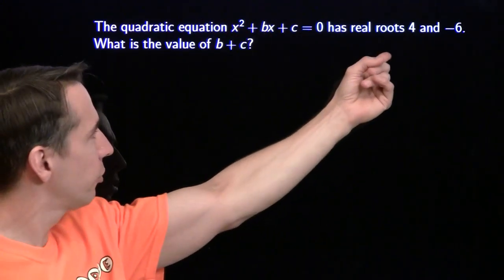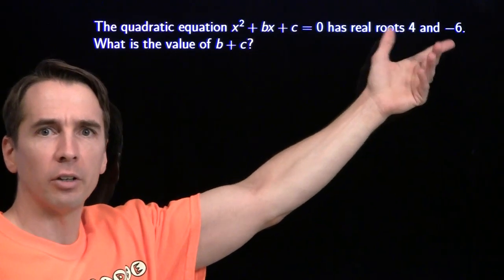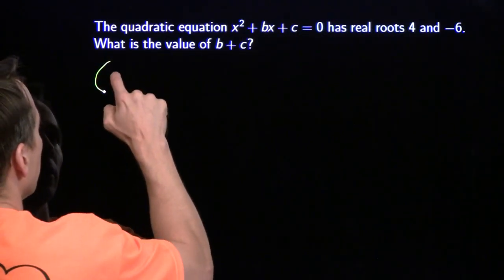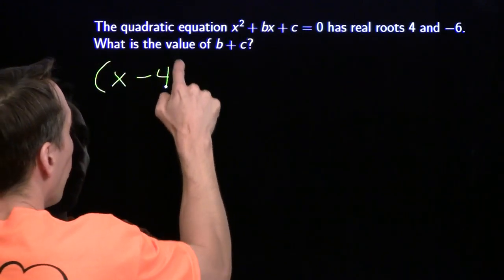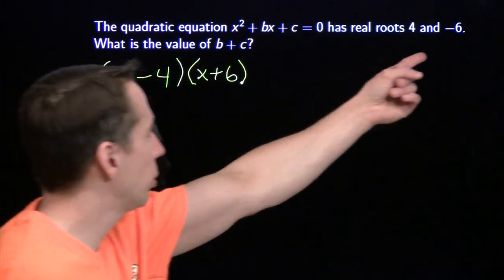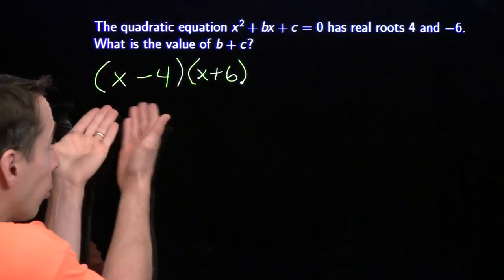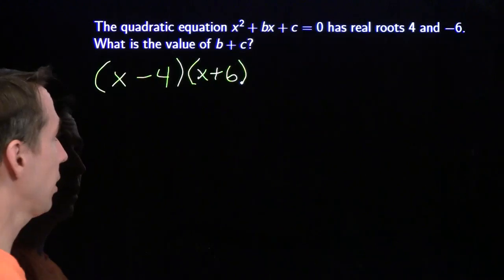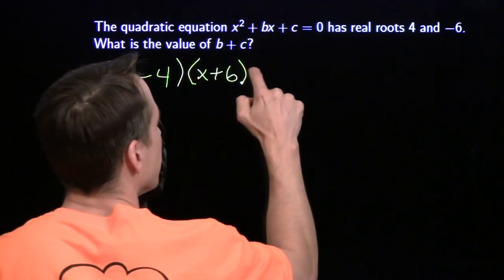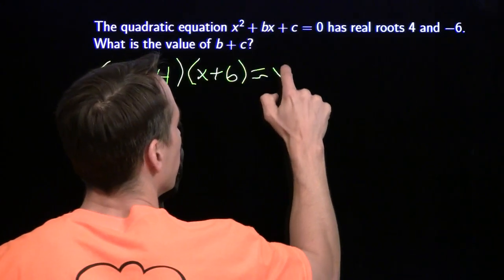We're told this quadratic has real roots 4 and negative 6, so we already know the factored form of this quadratic. It's just x minus 4 times x plus 6, because we put 4 in here we'll get 0, negative 6 we'll get 0. We just need it in this form, so we're going to multiply this out using the distributive property.